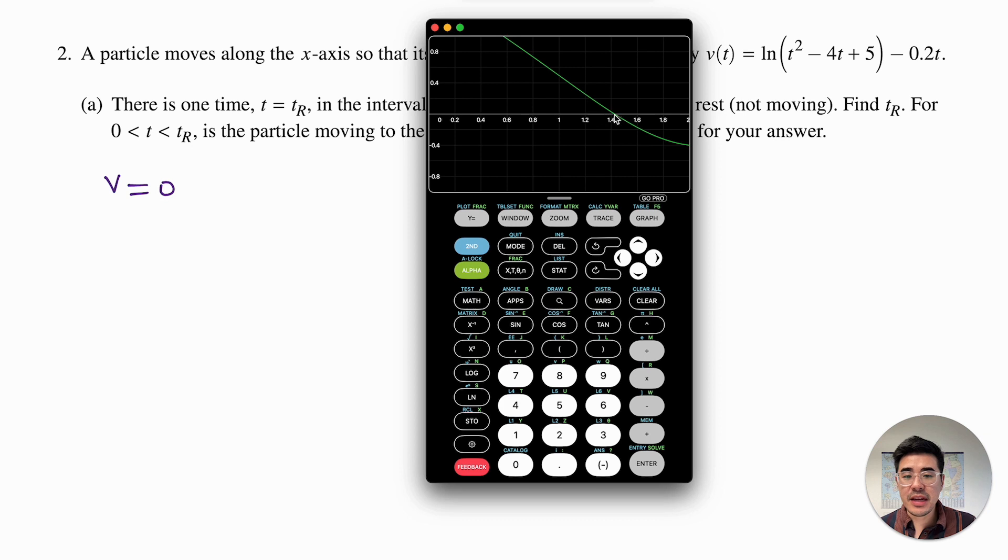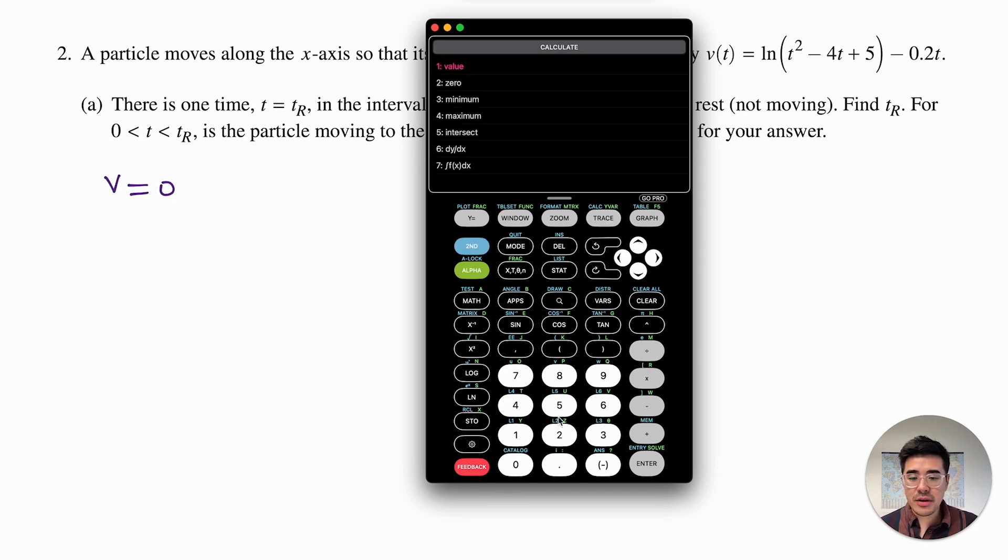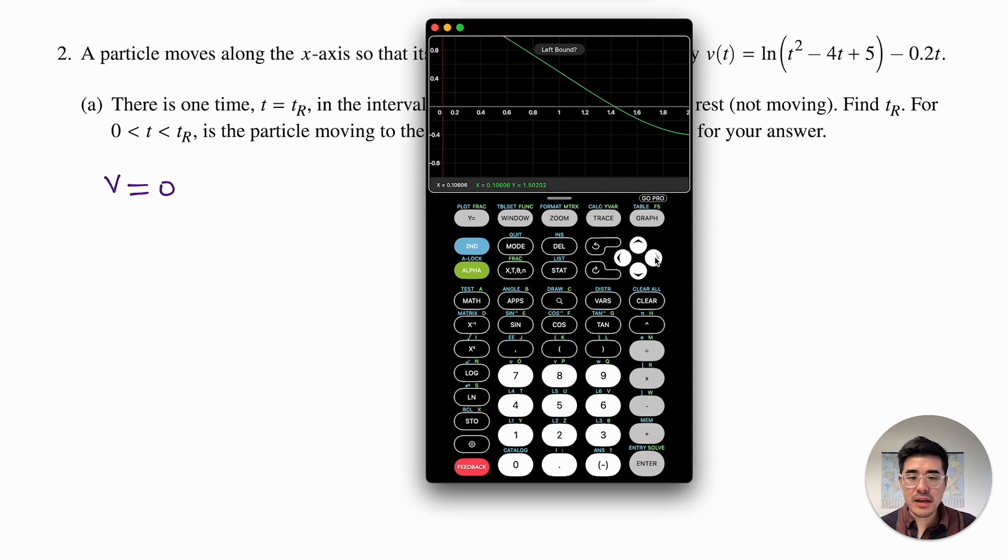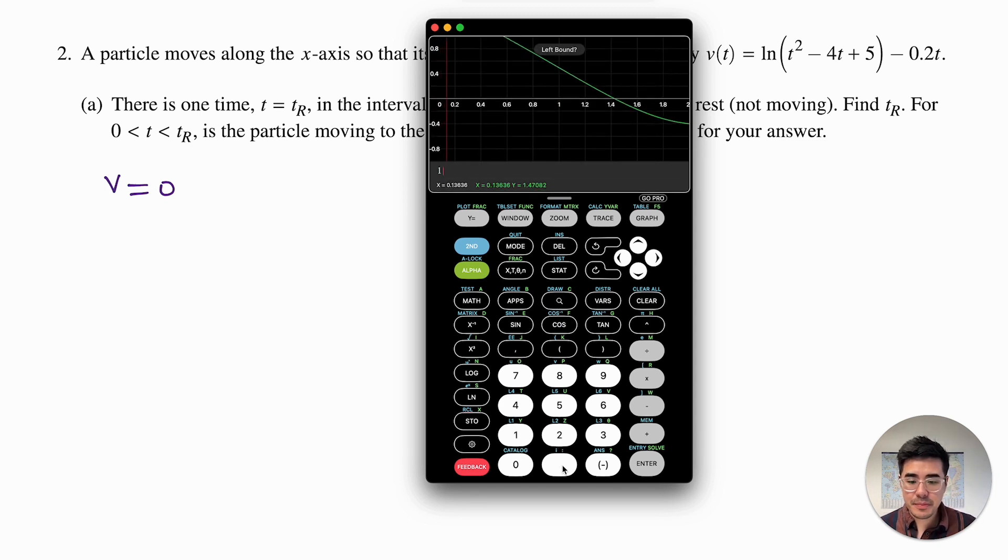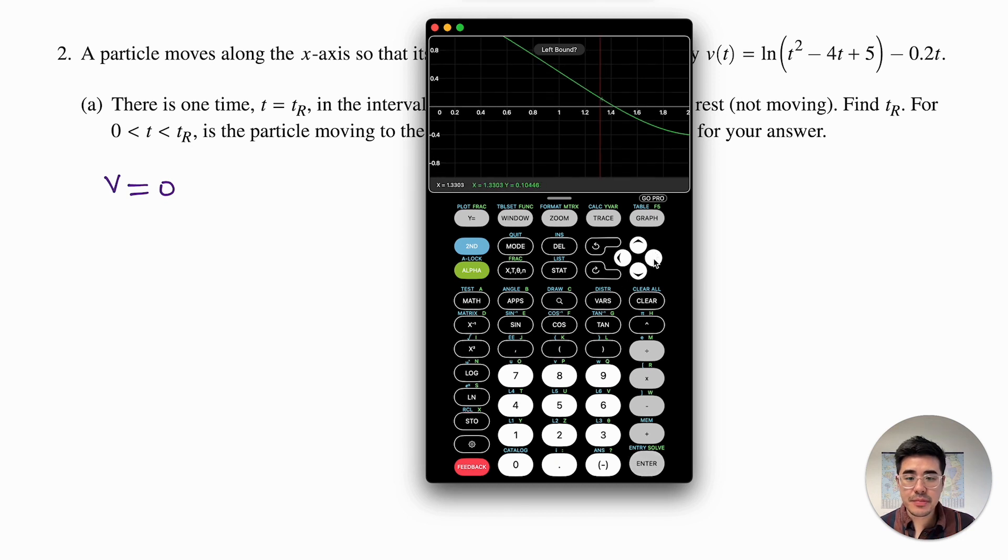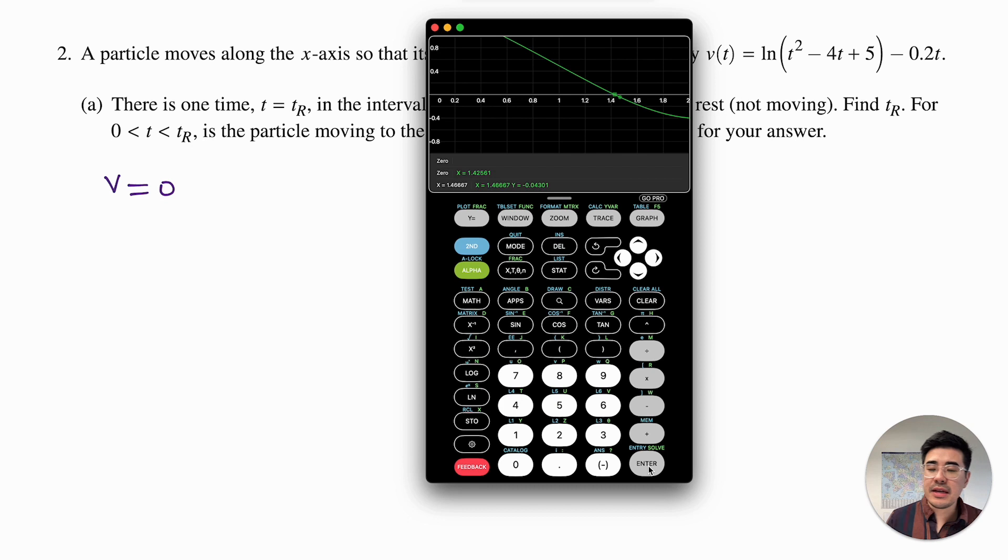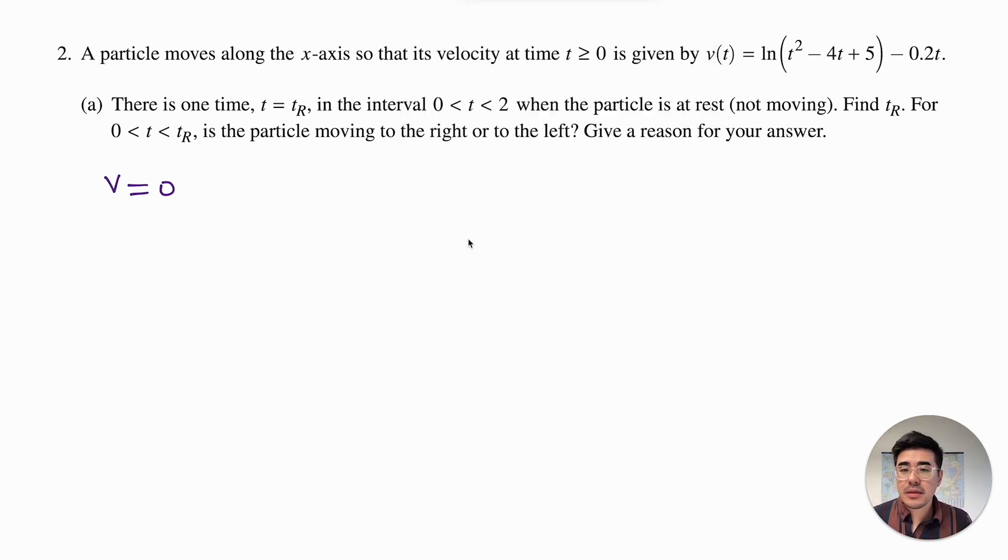I'm going to graph it over here and then I see that there is a point over here. So let's calculate that point. Second calc, I'm calculating the zero. I need to trap it to the left of the point, and then I need a right bound. And it says my zero is at 1.426, three decimal places. So to show that I know what I'm doing, I'm going to say v of t is equal to zero when t of r is equal to 1.426 seconds. It doesn't tell me, so there's no units here.